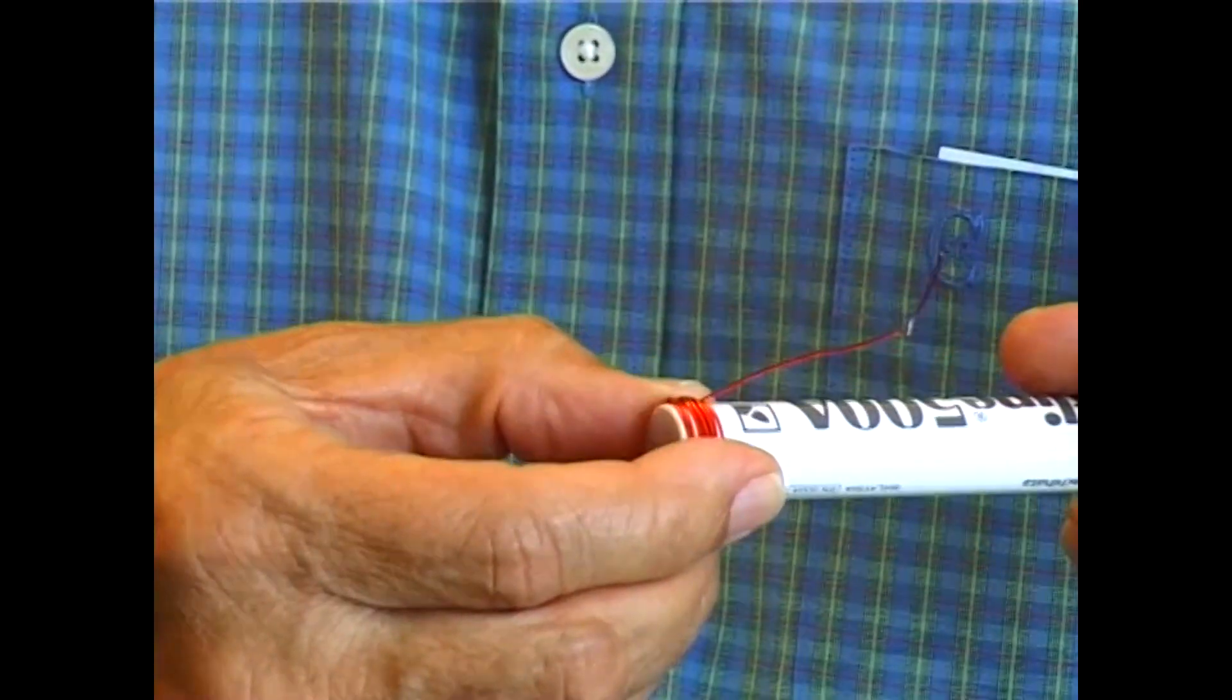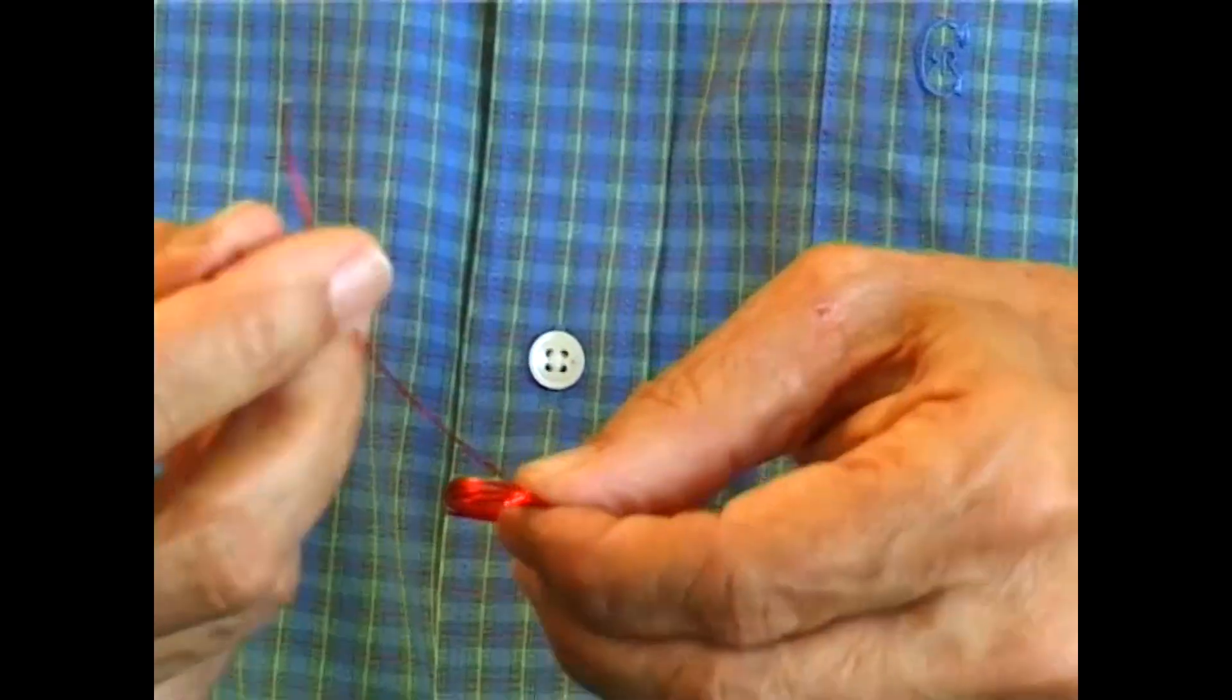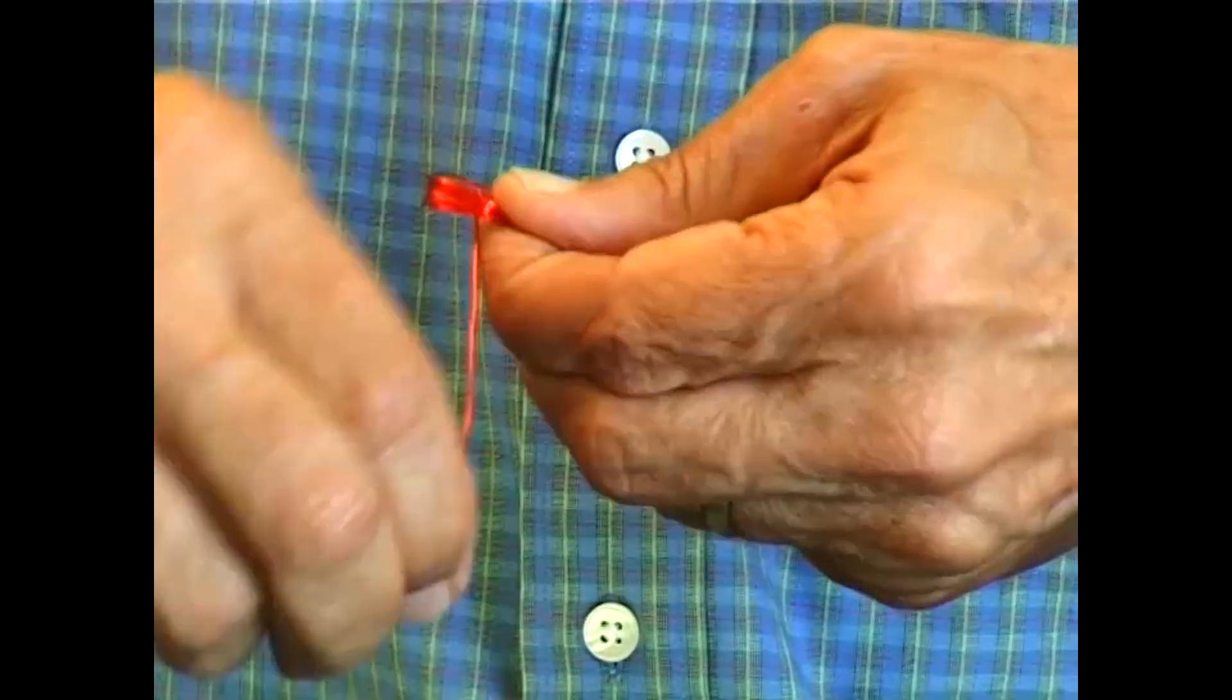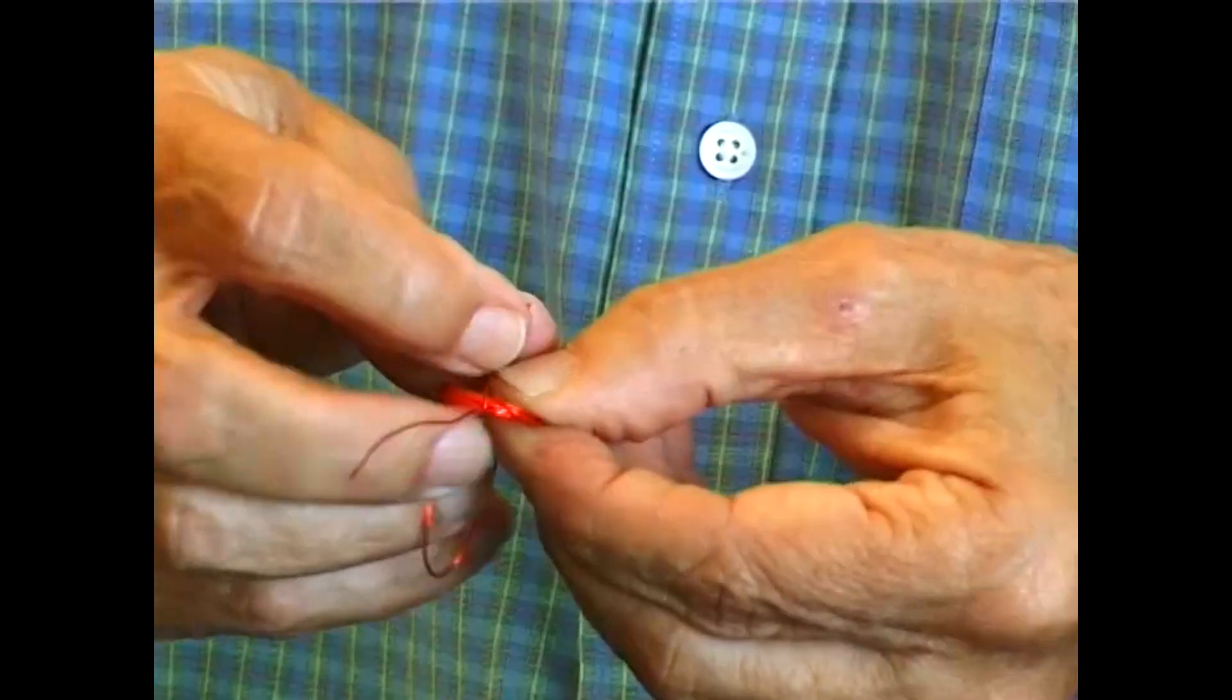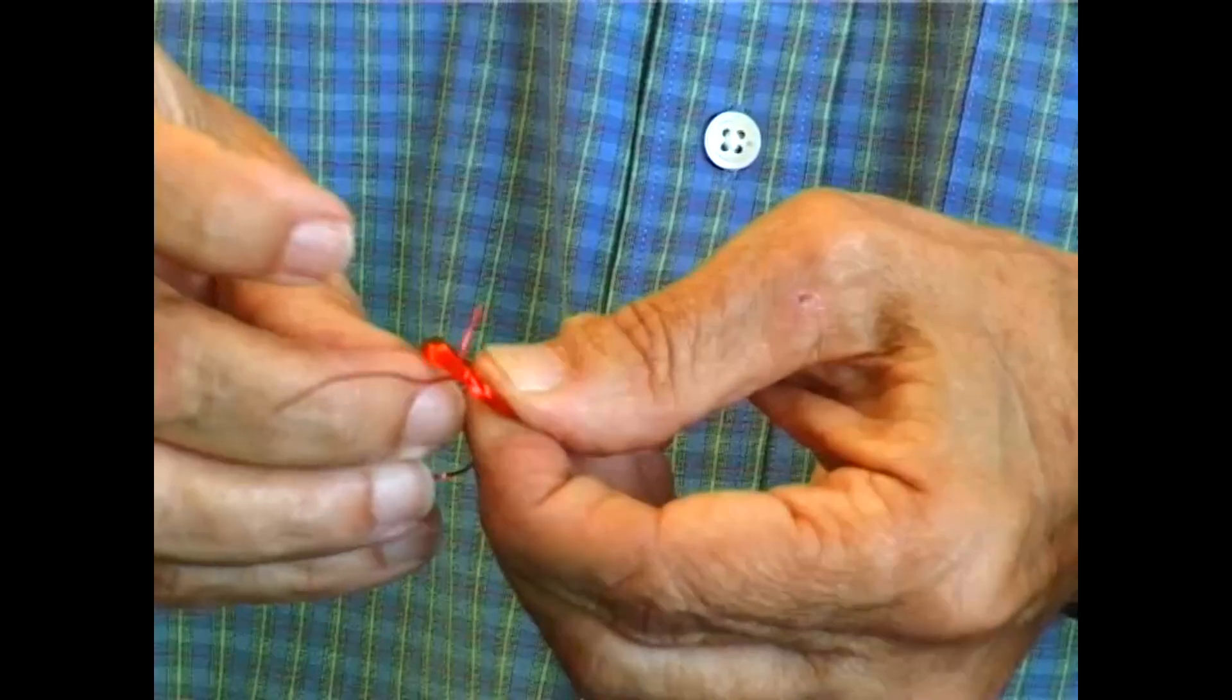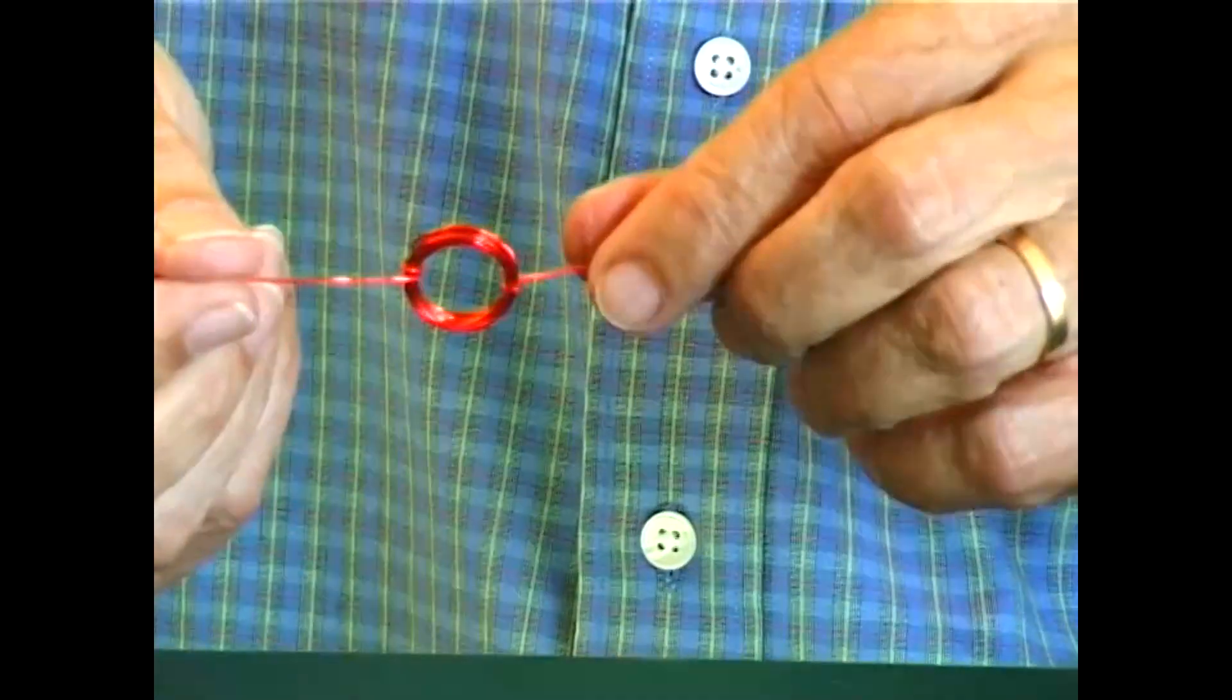Then you slide it off the pen like this and then you need to make it into a tight little coil by winding that around a couple of times, and then directly opposite you wind the other end around twice so that you end up with a little flat coil and two straight pieces each end like that.